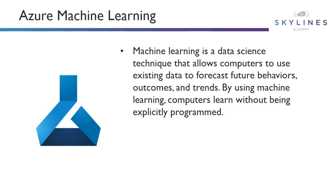Machine learning, by definition by Microsoft, is a data science technique that allows computers to use existing data to forecast future behaviors. That data might come from one of these data services we talked about, and then forecast future behaviors, outcomes, and trends. By using machine learning, computers learn without being explicitly programmed, and that's the big difference. There are two major services that Microsoft really wants you to understand.